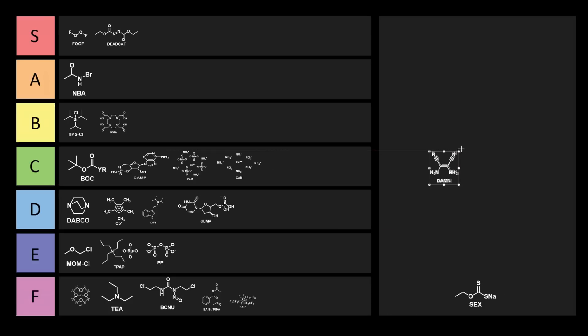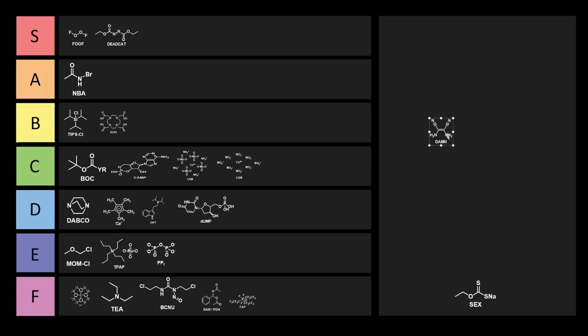Next we have DAM, diaminomalononitrile. This is a tetramer of hydrogen cyanide and has been proposed as a key substance for the prebiotic synthesis of nucleobases. This is part of chemical evolution. Oh, so that's how prebiotic molecules formed. Damn! Sodium! This one's awesome. We can put it right into S tier.